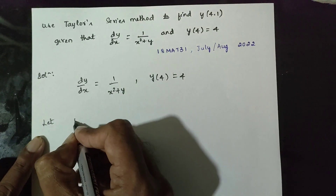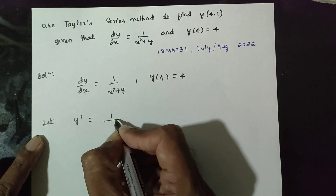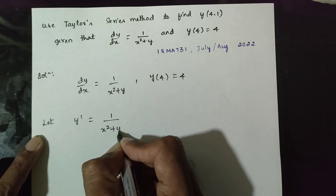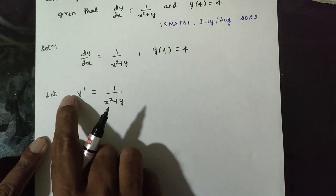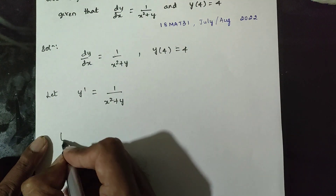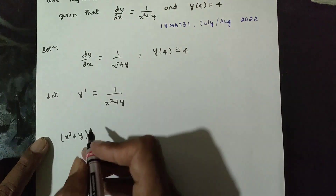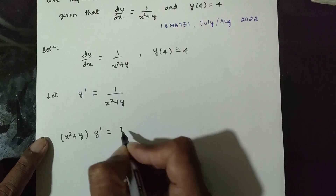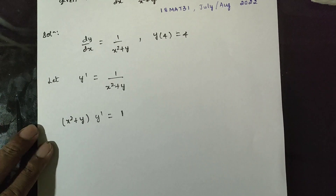Second problem: let dy/dx equals 1/y² plus y, so y-dash equals 1/y² plus y. The equation gives y² plus y into y-dash equals 1.